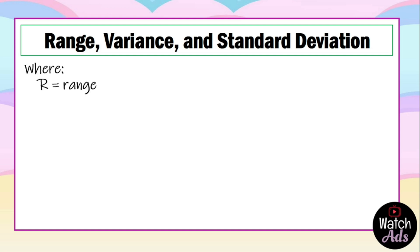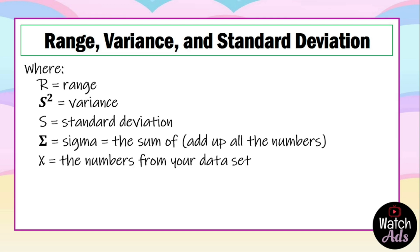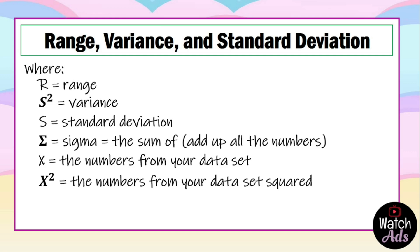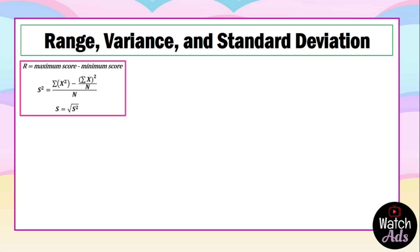R equals the range, s² equals the variance, s equals standard deviation. The symbol Σ is called sigma, which means the sum of — meaning we just add up all the numbers. x are the numbers from your data set, x² are the numbers from your data set squared, and n is the total number of numbers in your data set.